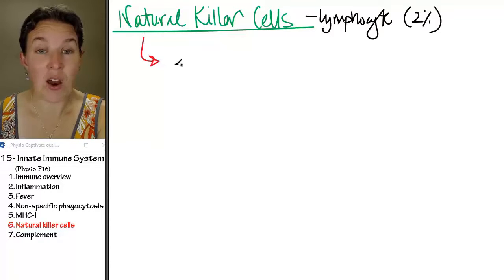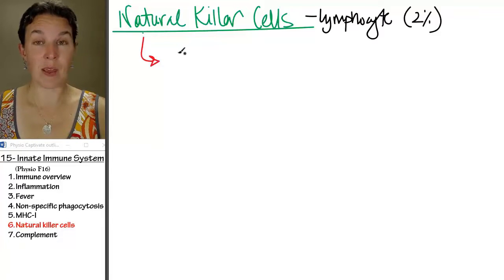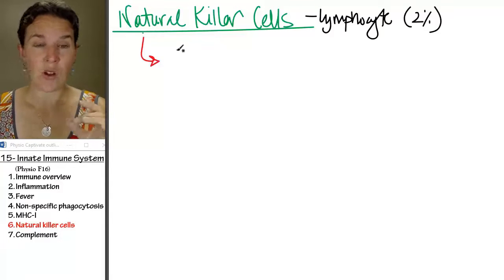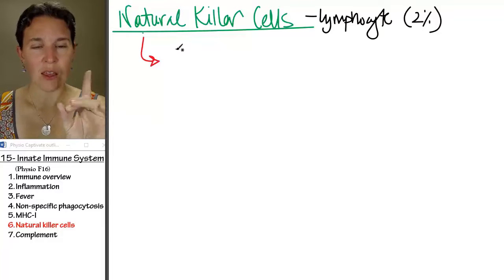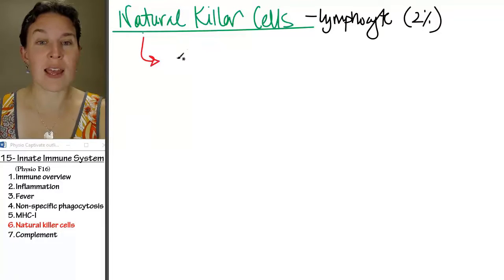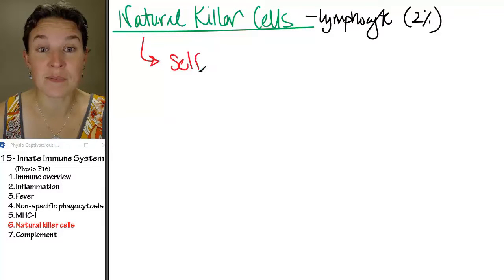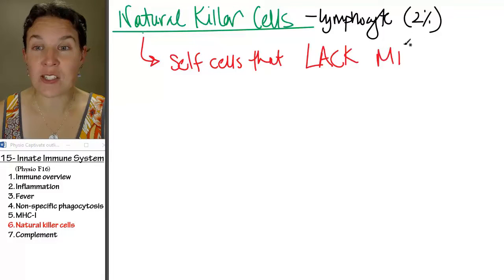They go around and they're nonspecific, so they're not responding to a specific antigen. They go around and they identify self cells that lack MHC1.